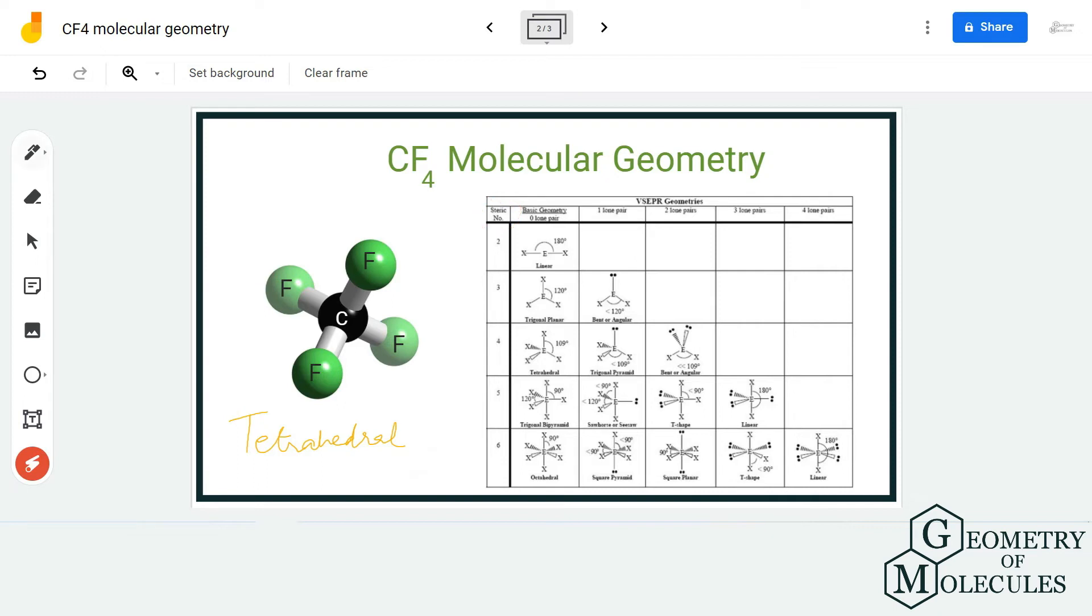To confirm it further, we are going to use the formula of steric number and AXN notation method. The steric number for CF4 will be 4 because there are four atoms of fluorine that are forming bonds with the carbon atom. Whenever molecules have a steric number of four with zero lone pairs, as there are no lone pairs on the carbon atom, it has a molecular geometry of tetrahedral.